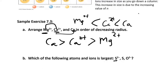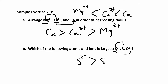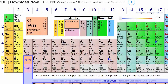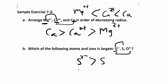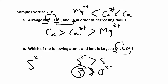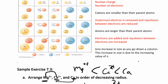We can also compare anions. Can we compare sulfur two minus, the oxide ion O2 minus, sulfur, and oxygen? When you add electrons the atom gets bigger, so sulfur two minus is bigger than sulfur. Then using the periodic table, oxygen is higher than sulfur, so sulfur is bigger than oxygen — meaning S2 minus is bigger than O2 minus. So the largest is the sulfide ion, S2 minus.